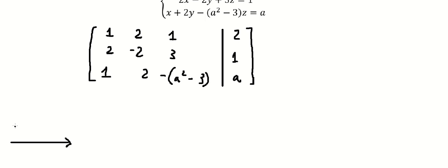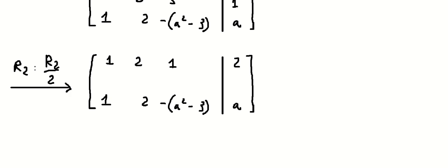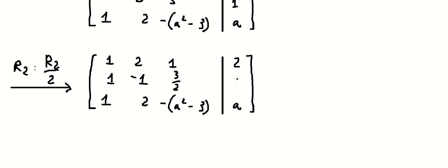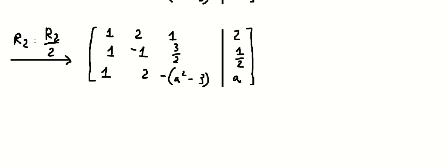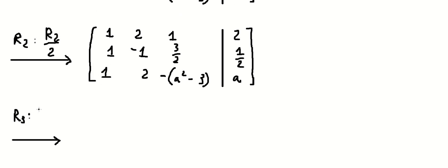On row number two, we need to divide by number two. On row number three, we need to apply: row number three minus row number one.